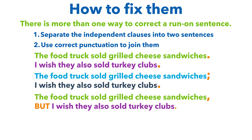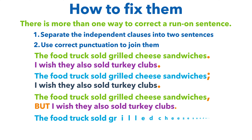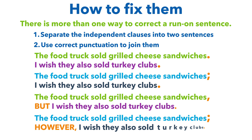A fourth way is to use a semicolon to separate the two independent clauses and a comma following the transitional expression: 'The food truck sold grilled cheese sandwiches; however, I wish they also sold turkey clubs.' This is how you would fix the problem of the transitional expression seen in the earlier example.